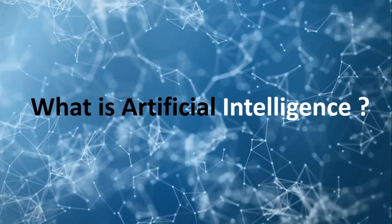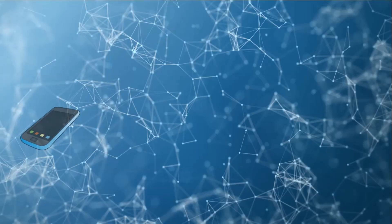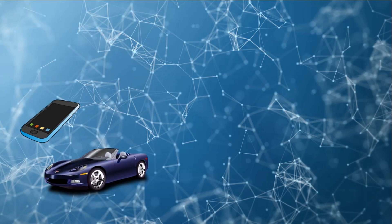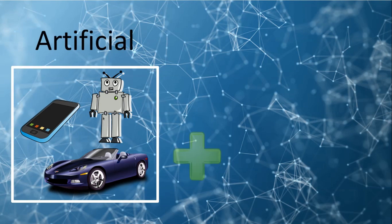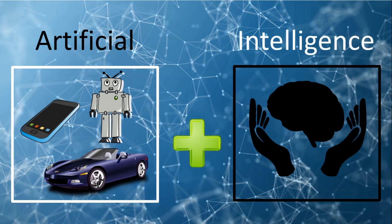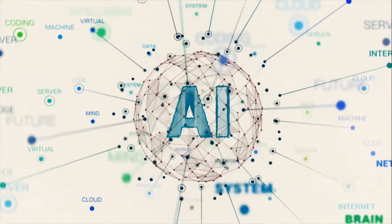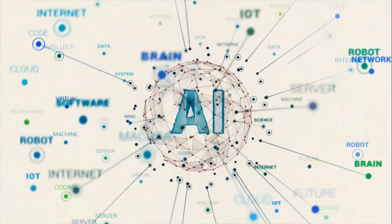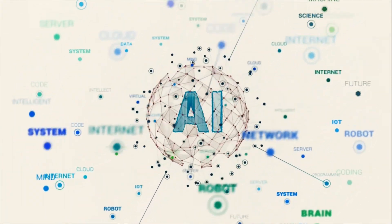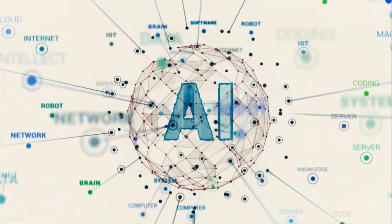What is artificial intelligence? Before we answer that, let's look at these terms individually. The term 'artificial' refers to anything made by humans — things that are not natural. 'Intelligence' is the ability to understand, think and learn. Combining these together, we get artificial intelligence: a broad area of computer science that makes machines seem like they have human intelligence. The goal of AI is to mimic the human brain and create systems that can function intelligently and independently.